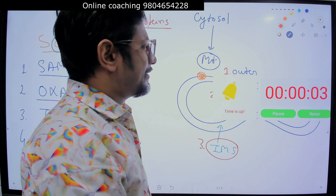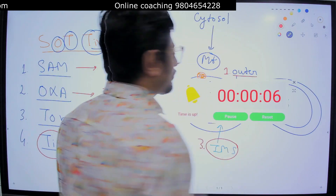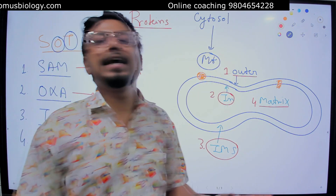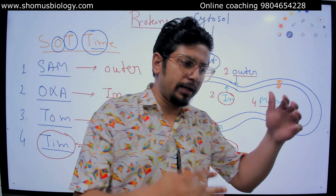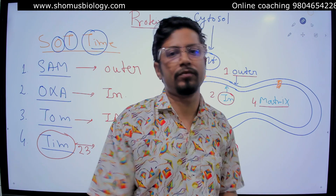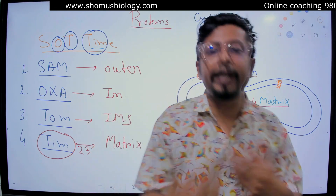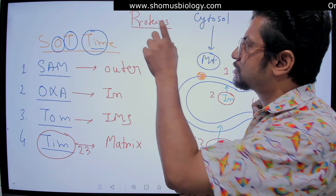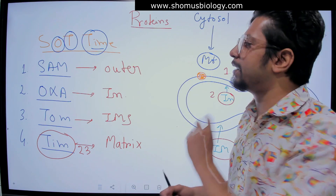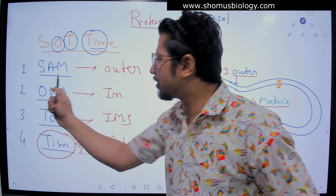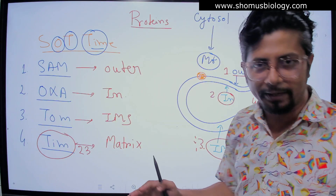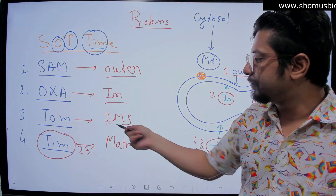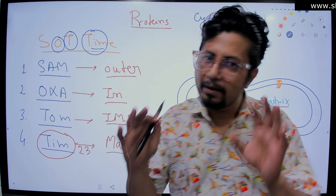And that's it! I believe you now understand the process of protein translocation. Although I already have several videos on the detailed mechanism of protein transport, I know that students often forget this particular step. So I made this quite easy with the 'Short Time' concept. This 'Short Time' mnemonic gives you the idea of the SAM complex, OXA complex, TOM complex, and TIM complex, and how they deliver proteins to the different locations of mitochondria — from the outer membrane, inner membrane, intermembrane space, and mitochondrial matrix.